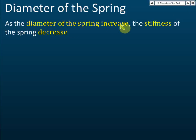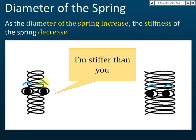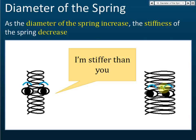Now we compare the diameter of the spring itself — this is different from the diameter of the wire. As the diameter of the spring increases, the stiffness decreases. A smaller spring diameter means higher stiffness, so a small spring is stiffer than a big spring: bigger diameter gives lower stiffness.